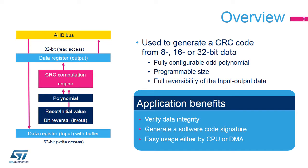The CRC calculation can also be used to compute the signature of the application software during run time, to be compared with a reference signature generated at link time and stored at a given memory location. Thanks to the full configurability of the STM32 CRC calculation unit, software overhead is reduced to a minimum. Additionally, the DMA controller can be used for back-to-back CRC calculations over a large block of data while the CPU is performing other tasks or in sleep mode.